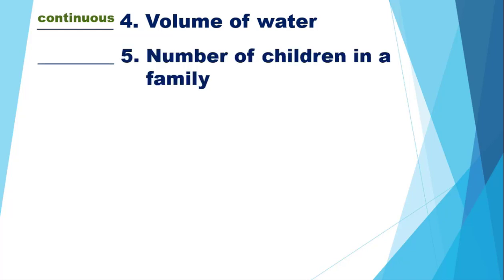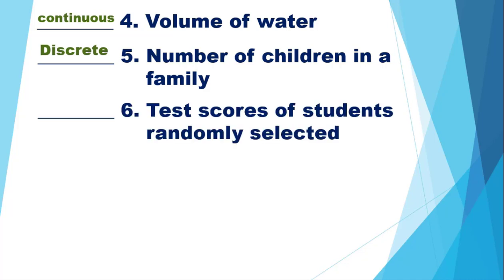For number 5, number of children in a family — it's discrete; it could be 0, 1, 2, and so on. For number 6, test scores of students randomly selected — in a 50-item test, scores are 37, 42, 38, 0, 1, 10, and so on. There is no decimal or fraction part, so we have a discrete variable.